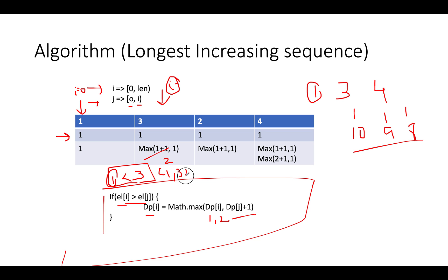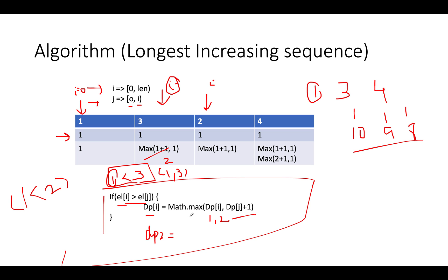Next, i moves to element 2. dp[j]=1 < dp[i]=2, so the formula applies: dp[2] = max(dp[2], dp[0]+1) = max(1, 2) = 2. The sequence is 1, 2. Then for the next j, dp[j]=3 and dp[i]=2 — this doesn't satisfy the condition, so we reject that case.